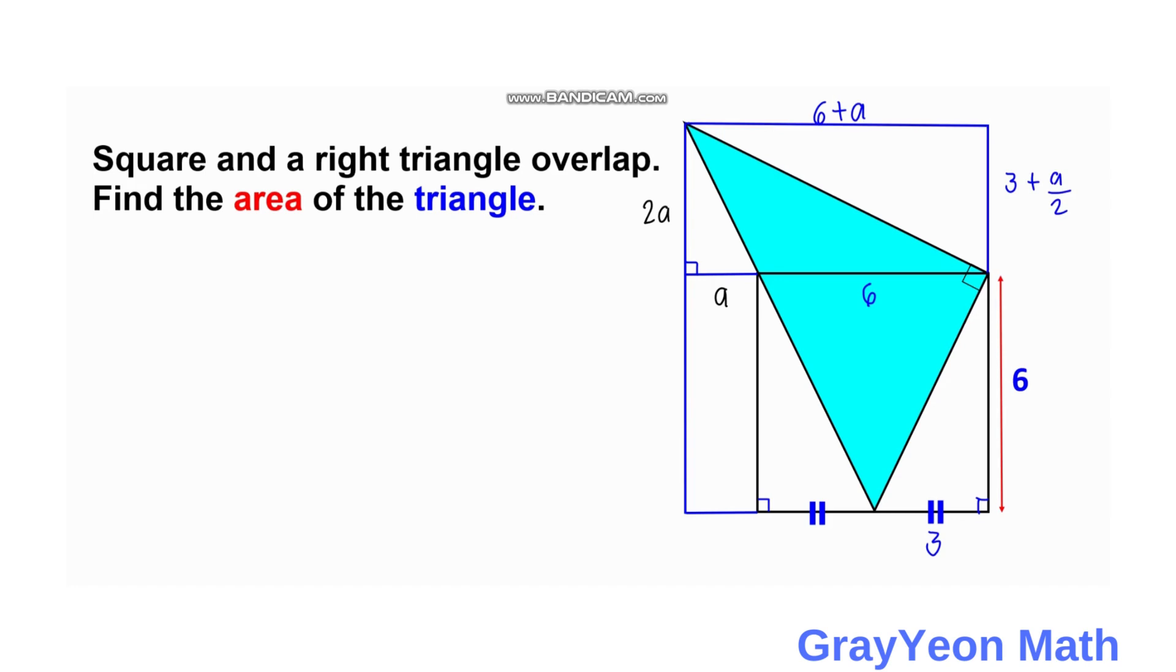Okay, so next is we compare these two sides, this length to this length. They are actually equal in length. So we have 3 plus A over 2 is equal to 2A. And we can simply multiply the whole equation by 2 to eliminate the one half. So we have 6 plus A over 2 times 2 equals A is equal to 4A.